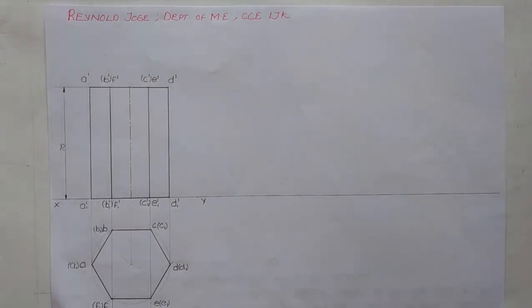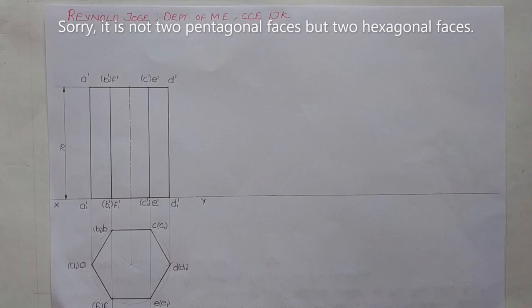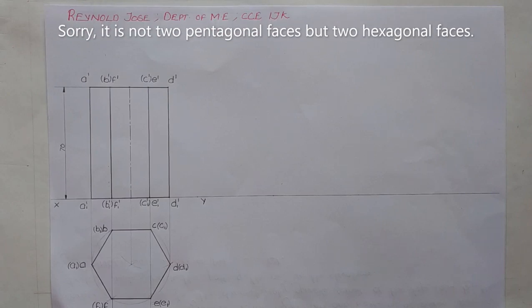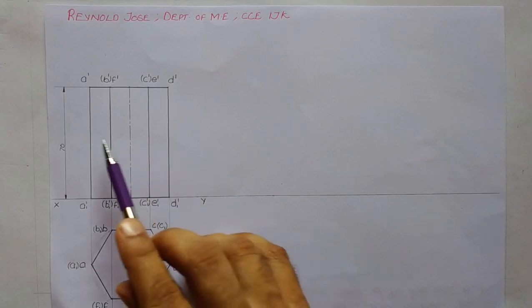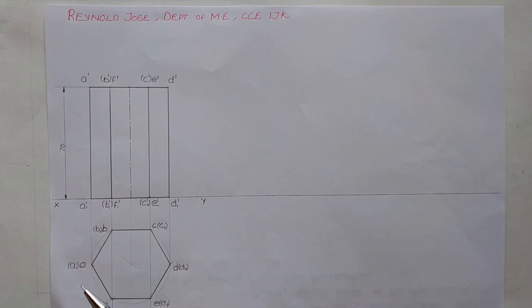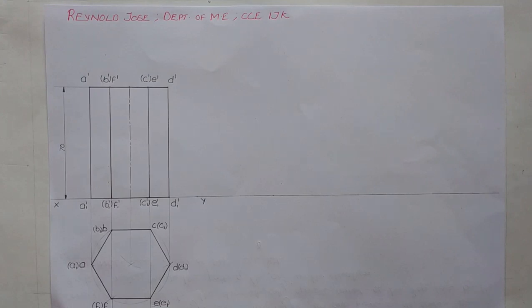Now we shall draw the development of the lateral surface. The regular hexagonal prism has six rectangular faces and two hexagonal faces — one on top and one on the bottom. The six rectangular faces along the sides are known as the lateral surface, and as per the question we are required to draw only the development of the lateral surface. After drawing the development, we will think about the travel of the ant.